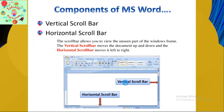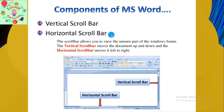The next component is the Vertical Scroll Bar and Horizontal Scroll Bar. The scroll bar allows you to view the unseen part of the window frame. The Vertical Scroll Bar moves the document up and down, and the Horizontal Scroll Bar moves it left to right.